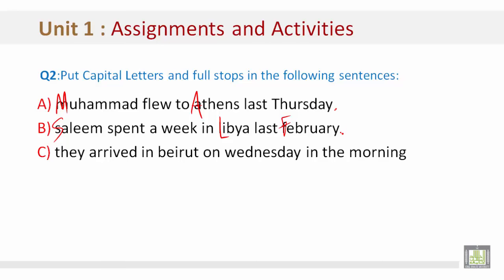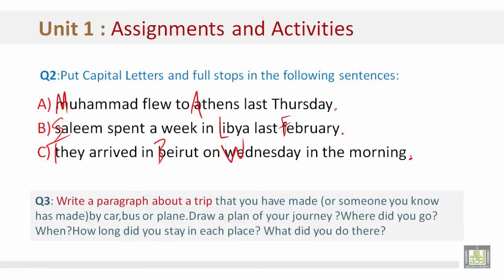Let's look at example C. The beginning of the sentence is always capitalized. They arrived in Beirut — the name of a city — on Wednesday morning — the name of a day of the week, which should be capitalized. We are missing a full stop. Now, I want you to write a paragraph about a trip that you have made, or someone you know has made, by car, bus, or plane. Draw a plan of your journey: where did you go, when, how long did you stay in each place, and what did you do there?